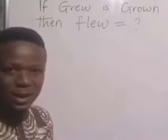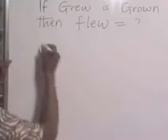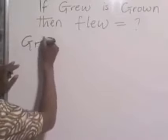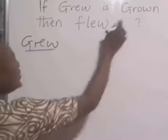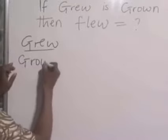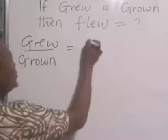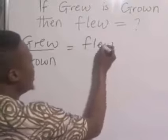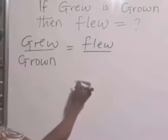if we want to get the past participle, look at what the mathematical will do. Grew all over grown is equal to flew all over the past participle, we don't know,